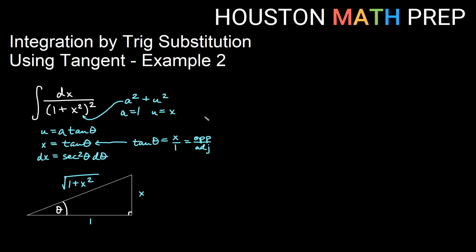Okay, if we use all of that and replace x's in terms of θ, our dx becomes sec²θ dθ on the top, over we have the quantity 1 + x² becomes 1 + tan²θ. So all of that is squared.